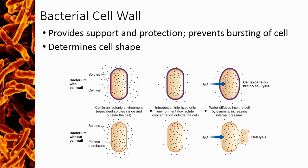The cell wall prevents the cell from bursting due to osmotic pressure when it's placed in a hypotonic environment — one that has low solute concentration outside of the cell compared to inside. The fact that bacteria with a cell wall will expand but not lyse is different from animal cells, which would burst if too much water crossed into the cell. While the majority of bacteria have a cell wall, the few species that do not would undergo cell lysis and must only live in isotonic environments. Besides protection, the cell wall is also what gives the species their shape.